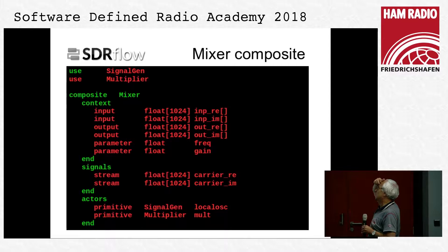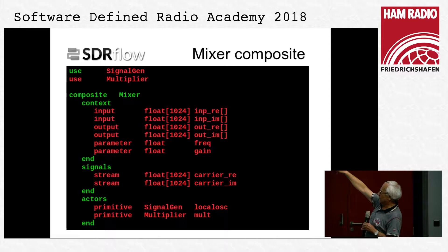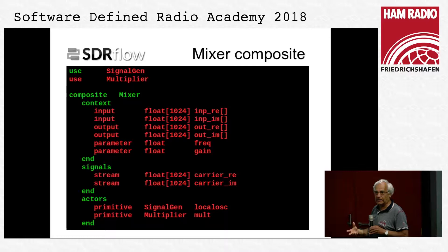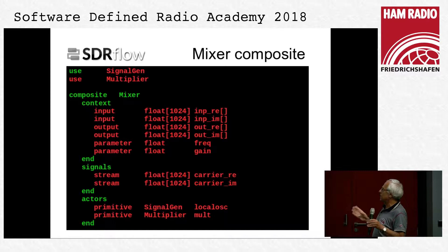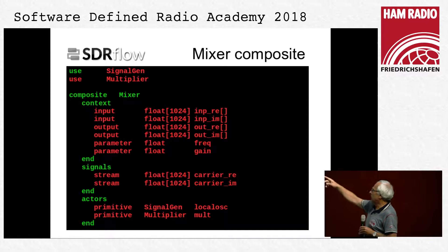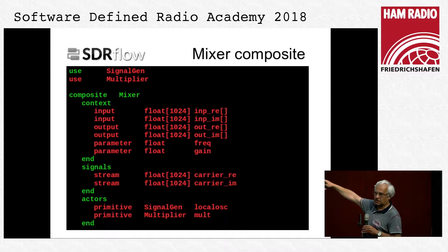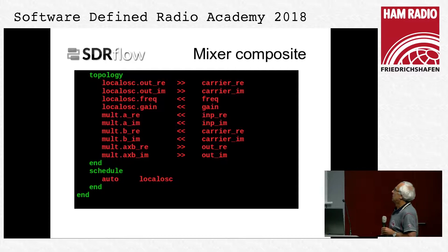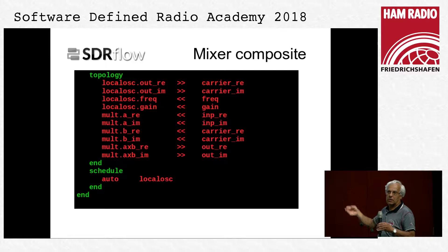Here is the mixer composite. In the mixer you use two components: the signal generator and the multiplier. The mixer has an input, an output, and two parameter inputs. Right now the mixer uses complex signals, implemented such that the complex signal consists of a real stream and an imaginary stream. The mixer has a single internal signal, which is the carrier. Here are the two instances of the components: the local oscillator is an instance of the signal generator, and the mult is an instance of the multiplier. Here you can see the topology which corresponds to the block diagram shown earlier.